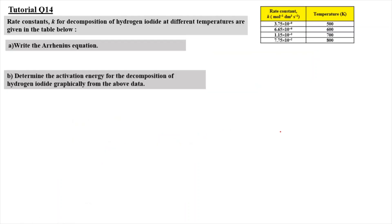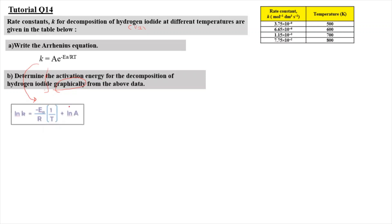For question 14, we are given the rate constant K for the decomposition of hydrogen iodide at different temperatures in a table, for example at 500 K: K = 3.75 × 10⁻⁹ mol⁻¹s⁻¹. For part A, write the Arrhenius equation: K = Ae^(−Ea/RT). For part B, we determine the activation energy graphically using the linearized form: ln K = (−Ea/R)(1/T) + ln A. The derivation is not required but is available in the lecture videos.